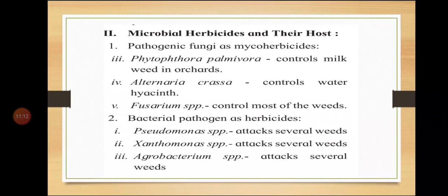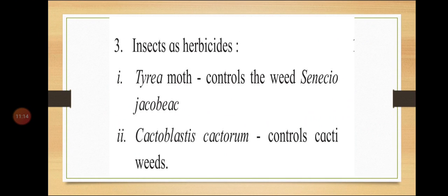Insects are also used as herbicides. Tyria moth is used to control the weed Senecio jacobaea, and Cactoblastis cactorum is used to control cacti weeds. The names are difficult to remember, so you need to write and practice them so it will be easier to learn.